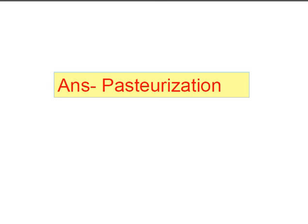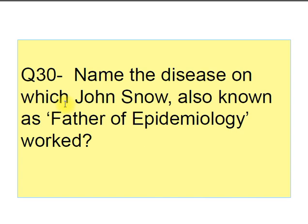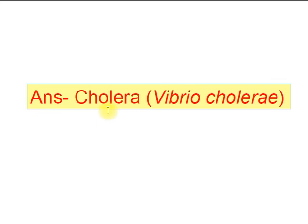Question number thirty: name the disease on which John Snow, also known as father of epidemiology, worked. John Snow worked on the disease cholera, which is caused by the bacteria Vibrio cholerae. This disease is acquired by the ingestion of contaminated water.